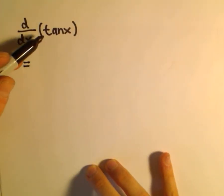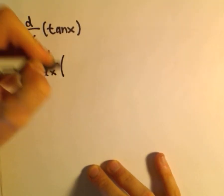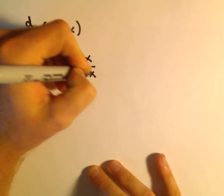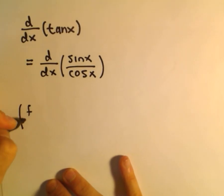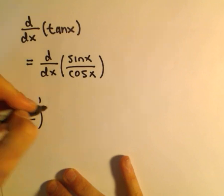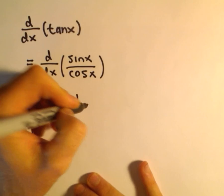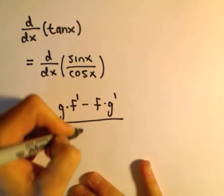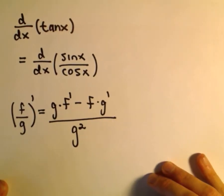Suppose we want to figure out the derivative of the function tangent x. All we're going to do is simply rewrite tangent as sine over cosine. And now all we're going to use is just the good old quotient rule. The quotient rule says if you have one function divided by another and we take the derivative, we get the bottom times the derivative of the top minus the function on top times the derivative of the bottom, all over the denominator squared.